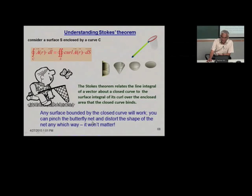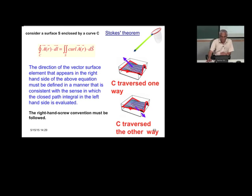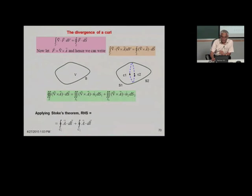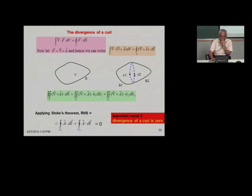The divergence of a curl is zero — this is another standard textbook result. Let us also summarize the important points: the surface S is not unique for a given C; the direction of the curl is specified by the right-hand rule given the sense of C; the surface need not be planar; and the theorem applies only to orientable surfaces for which the normal at every point is uniquely defined.